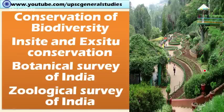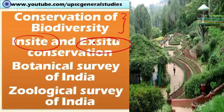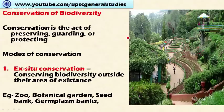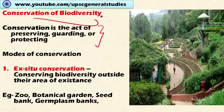In this video, let's discuss conservation of biological diversity, different modes of conservation — that is in-situ conservation and ex-situ conservation — and organizations important in the conservation of biological diversity in India, that is Botanical Survey of India and Zoological Survey of India. Conservation means the act of preserving, guarding, and protecting biodiversity for the future use of human beings and mankind as a whole.